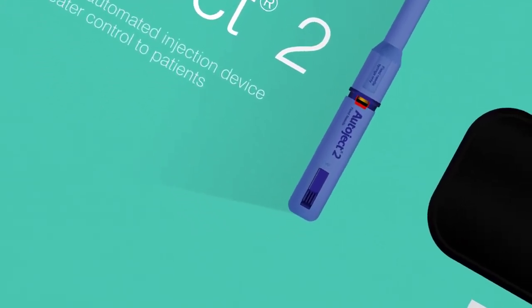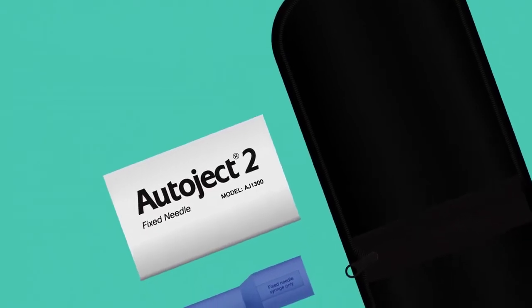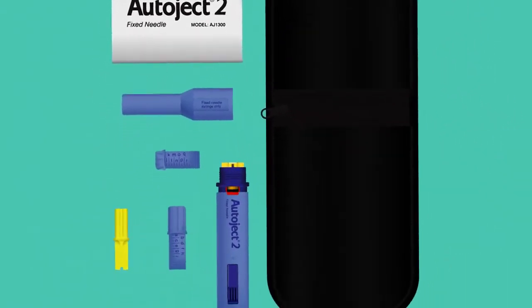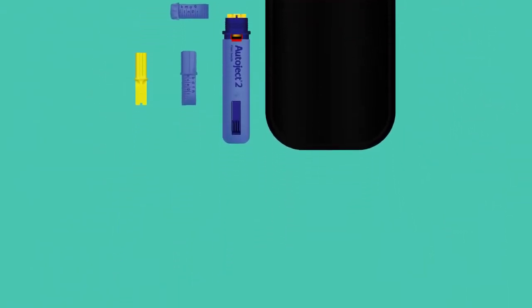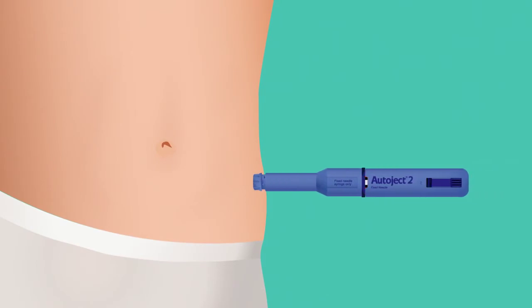Administering syringe injections can be stressful. Autoject 2 is a syringe injection aid designed to help reduce user anxiety while making self-injection easier and more manageable. Simply load your syringe and at the touch of a button Autoject 2 delivers medication into the subcutaneous layer of the skin.